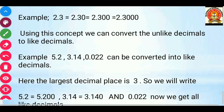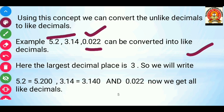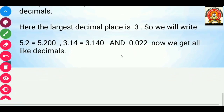For example, look at this: we are having 5.2, 3.14, and 0.022. First, we select the largest decimal place in the decimal part — here it is 3. So we rewrite the remaining decimals to have 3 decimal places: 5.2 becomes 5.200, 3.14 becomes 3.140, and 0.022 remains 0.022. Now we have all like decimals.